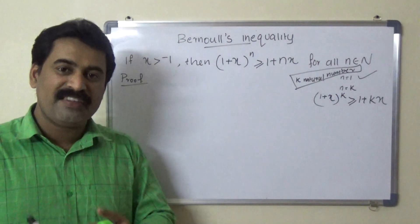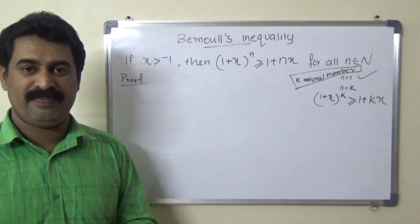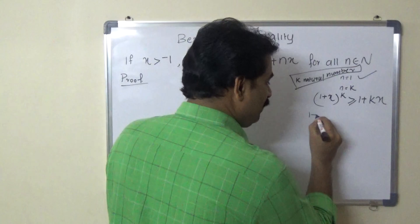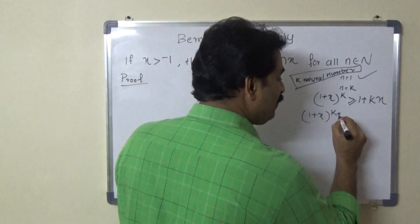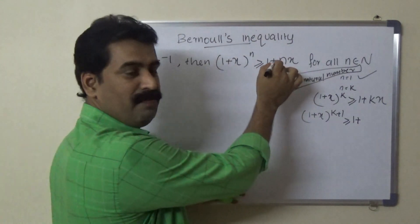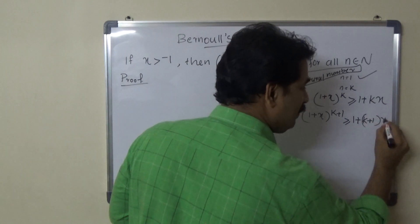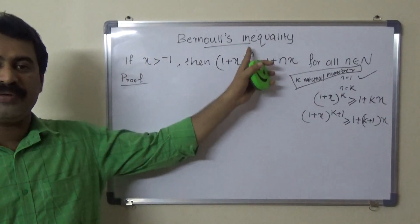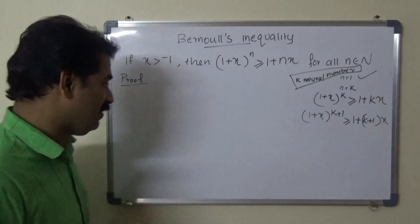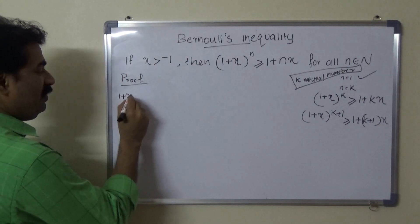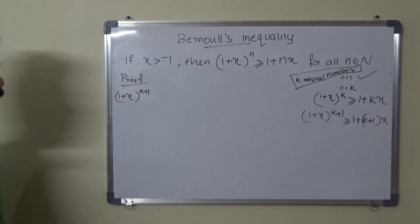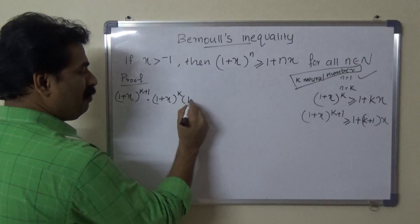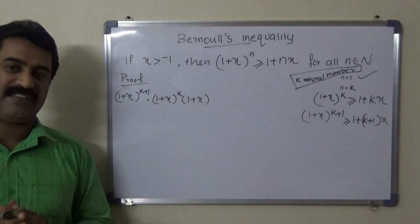Next, we want to prove this result is true for n equals k plus 1. That means we have to prove (1 + x) raised to (k + 1) is greater than or equal to 1 + (k + 1)x. For this, we take the LHS: (1 + x) raised to (k + 1), which equals (1 + x) raised to k, multiplied by (1 + x).